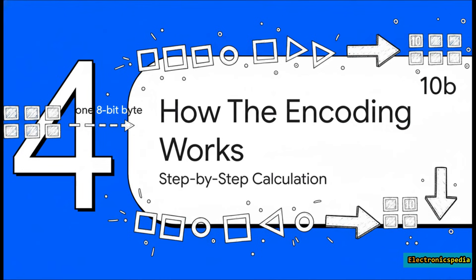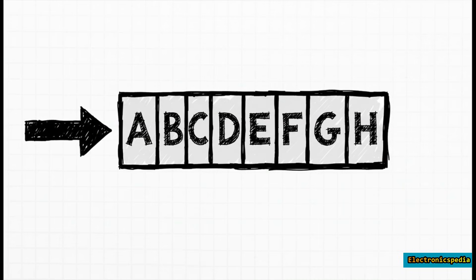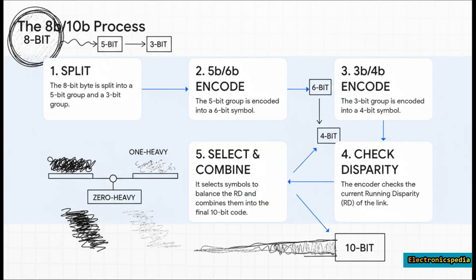Let's get into the nitty-gritty of the actual encoding process. We're going to take a single eight-bit byte and follow it through the whole journey. We start with a regular old eight-bit byte — any piece of data, really. We've labeled the bits A through H so we can keep track of them. This five-step dance is really the heart of the whole thing. In step one, we take that eight-bit byte and just split it into a five-bit chunk and a three-bit chunk.